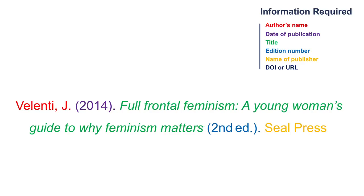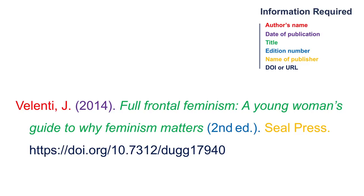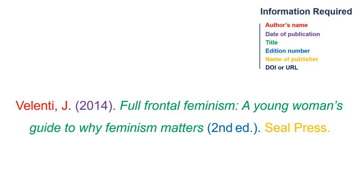Surround the edition in parentheses and finish with a period. The name of the publisher comes next. Follow with a period. If there is a DOI or a URL included in the catalogue record, include it here. If you do not see a DOI or URL listed, it is not necessary in the citation.